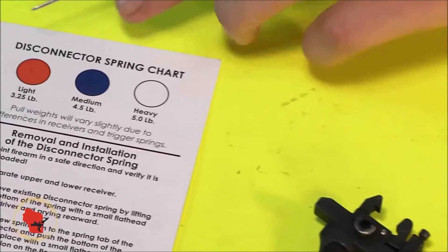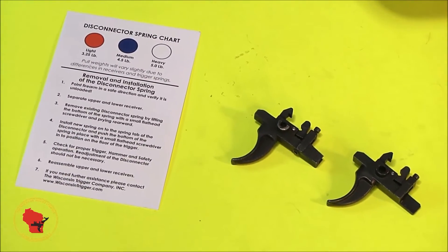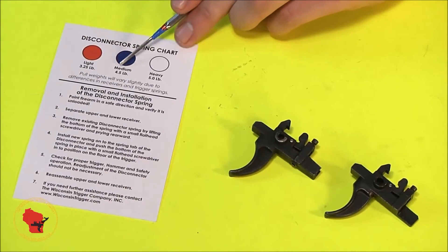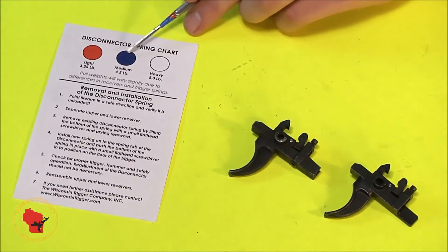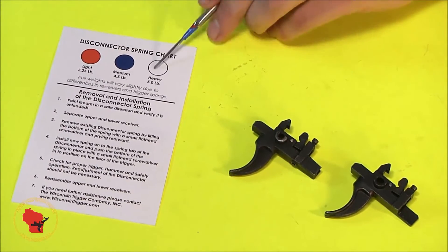With the three springs that are included, you can set your second stage pull weight for your particular preference. The MK2 comes pre-assembled with the blue spring at about four and a half pounds, but you also have the option of the red spring and the white, three and a quarter and five pounds respectively.